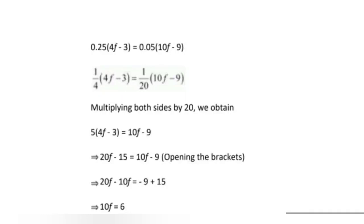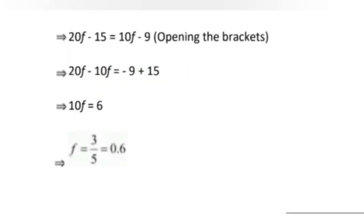Opening the left hand side bracket: 5 into 4 is 20f minus 5 into 3 is 15. Right side is 10f minus 9. Writing variables separately: 20f minus 10f is 10f equals 9 minus 15, which is 6. So f equals 6 upon 10, which equals 3 upon 5. In decimal you can write 0.6. Scholars, exercise 2.5 is completed.